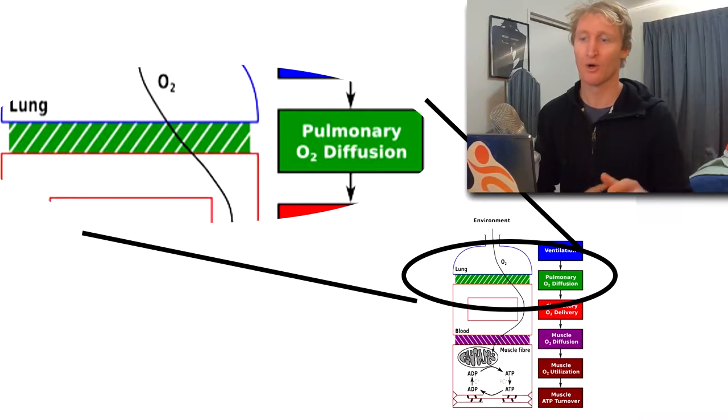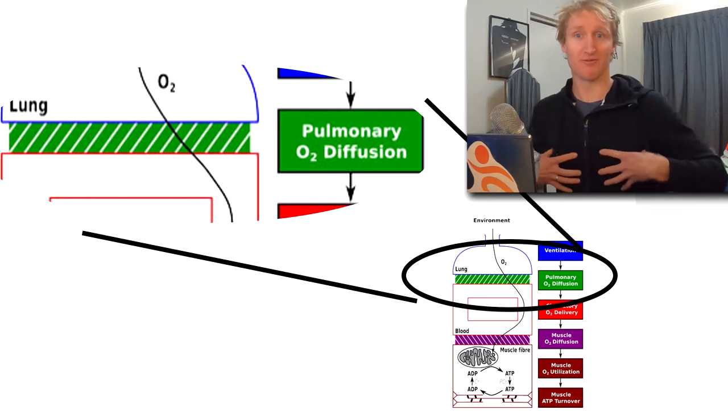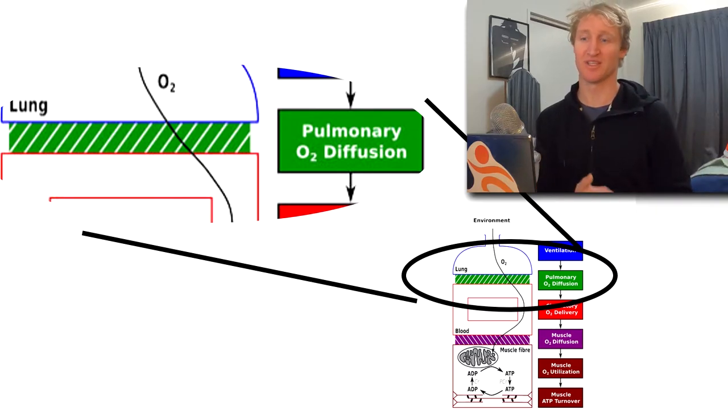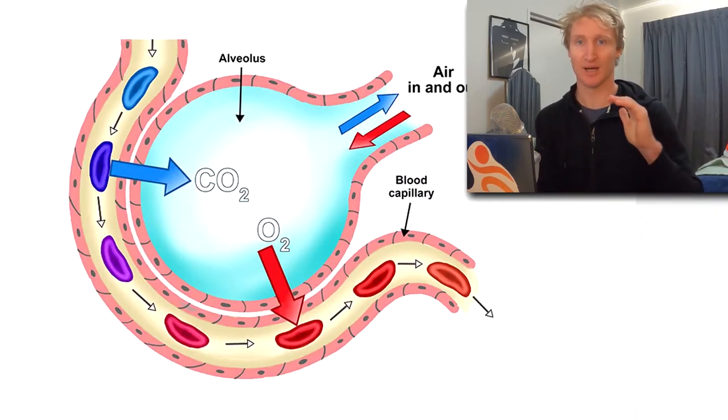What becomes limiting then is transferring the oxygen that we breathe in from our lungs into our bloodstream. So that's the pulmonary O2 diffusion, getting oxygen from our lungs into our blood, and that comes down to a pressure gradient and the amount of red blood cells we have in our system.